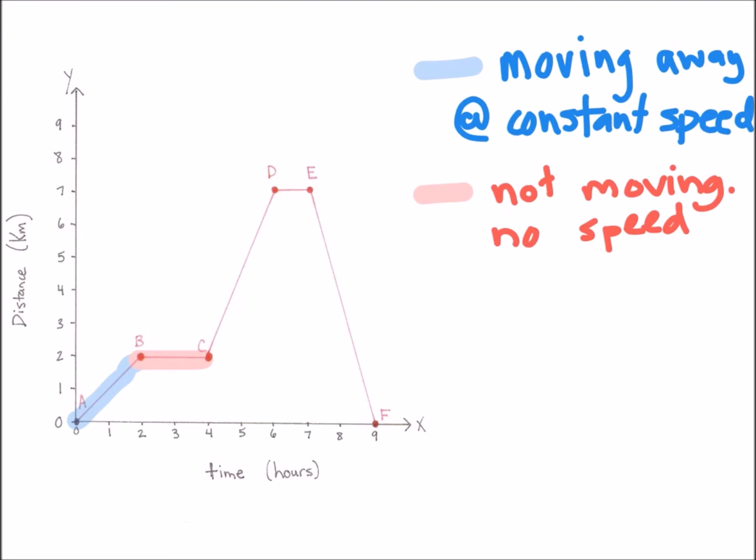The third segment moves from 2 kilometers to 7 kilometers away over the course of 2 hours. So we can say that we're moving away from our starting point and we have constant speed as the slope is constant throughout that entire segment.